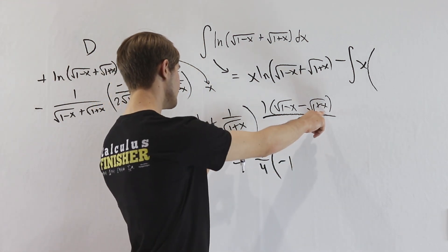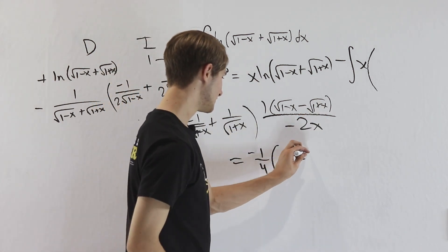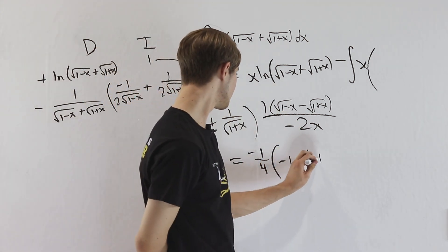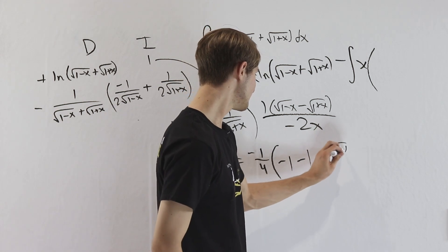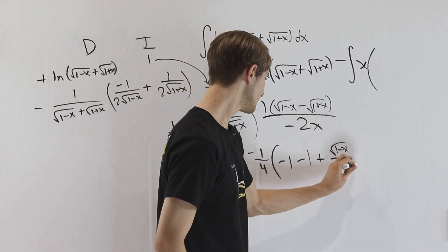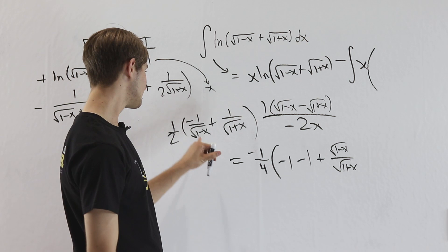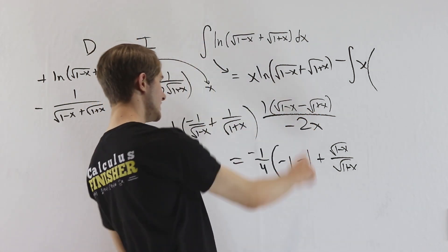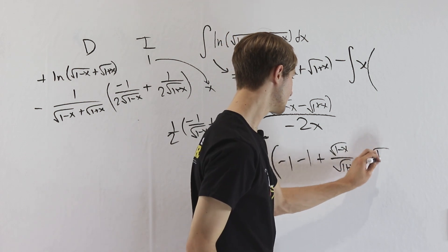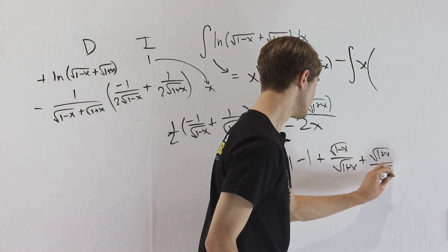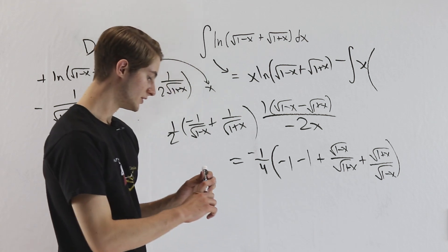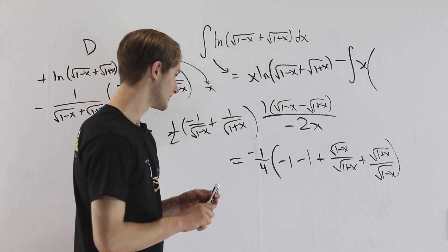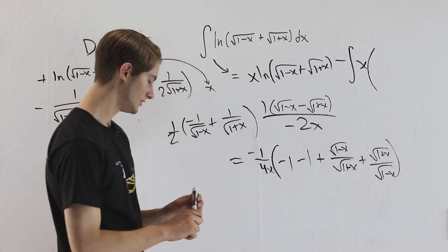Then we do the same thing for the next pair of terms, giving another minus 1. If we multiply the cross terms, we get plus the square root of 1 minus x over the square root of 1 plus x. And lastly, two negatives make a positive, so we get plus the square root of 1 plus x over the square root of 1 minus x. Also, I forgot the x out in the front — it goes there as well.